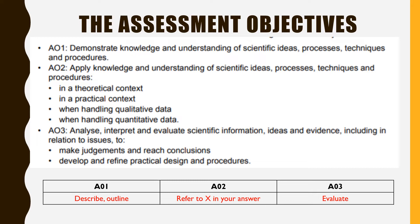We can't really talk about psychology A-level without also talking about what are known as the assessment objectives. You might be familiar with assessment objectives from other subjects like English. Psychology itself has its own assessment objectives, and I'll talk about the proportion of marks in those different objectives on the next slide. They're called AO1, AO2 and AO3 — and you might even get to the stage in your A-level course where teachers just use those terms and you know exactly what they mean.